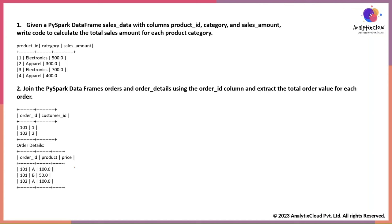The first question: given a PySpark DataFrame called sales data, we have three columns — product ID, category, and sales amount. We need to write code to calculate the total sales amount for each product category. For example, for electronics, the total sales amount would be 500 plus 700 which equals 1200, and for apparel it would be 700.